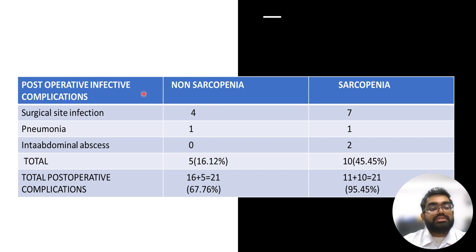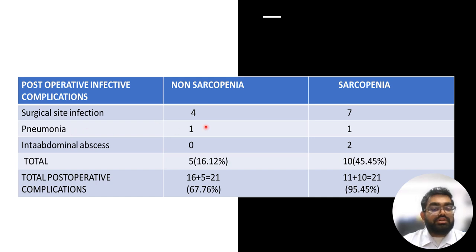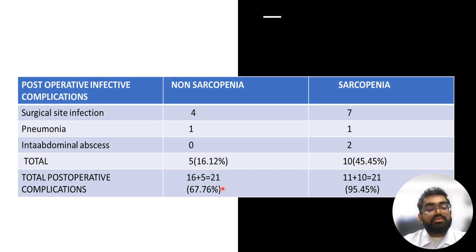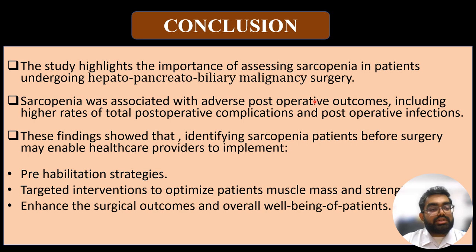Post-operative infective complications were evaluated in both groups. Surgical site infection occurred in 4 non-sarcopenic and 7 sarcopenic patients. Pneumonia affected 1 non-sarcopenic and 1 sarcopenic patient. Intra-abdominal abscess occurred in 2 sarcopenic patients. In total, post-operative infective complications occurred in 5 non-sarcopenic and 10 sarcopenic patients, giving overall totals of 21 non-sarcopenic and 21 sarcopenic patients affected.